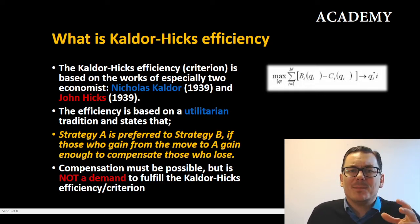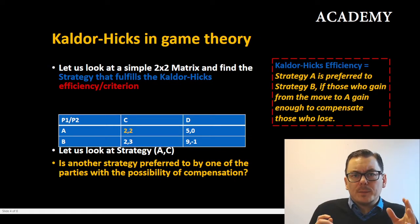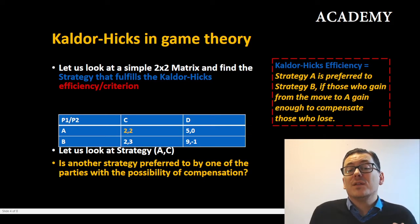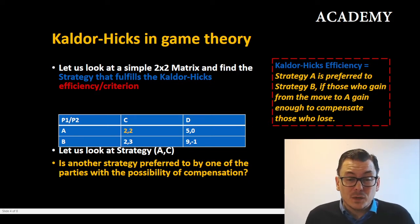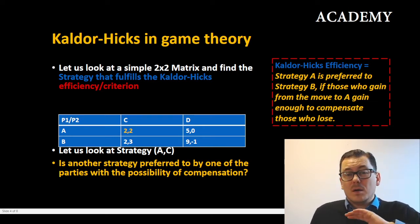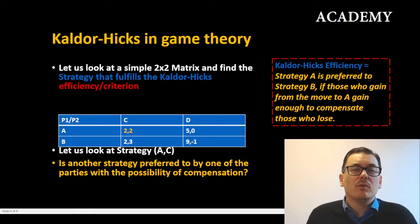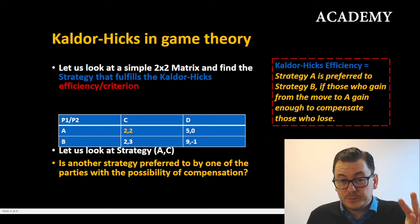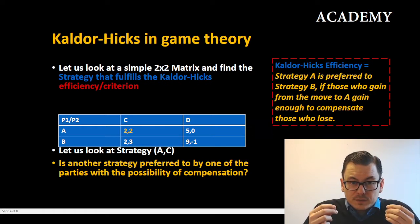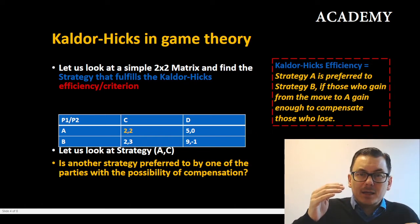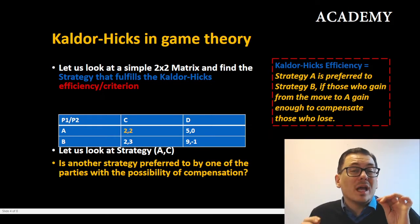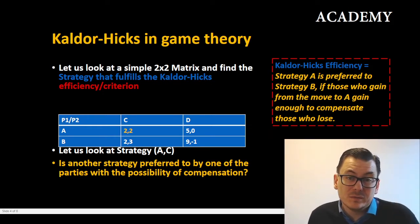Let's try to look at it in a game theoretical framework. I've put up a two-by-two matrix and we will now find the strategy that fulfills the Kaldor-Hicks efficiency or criterion. I put the criteria up here. We have two players, each have two strategies, and we will start in the upper left corner — it doesn't really matter where we start, we will have to go through every strategy no matter what. Here player one and player two both get a payoff of two. So now we have to ask ourselves: is there another strategy that one of the parties prefers where they will gain more and be able to compensate whatever the other party may lose?